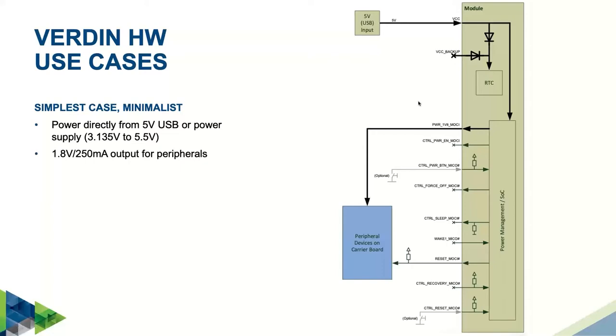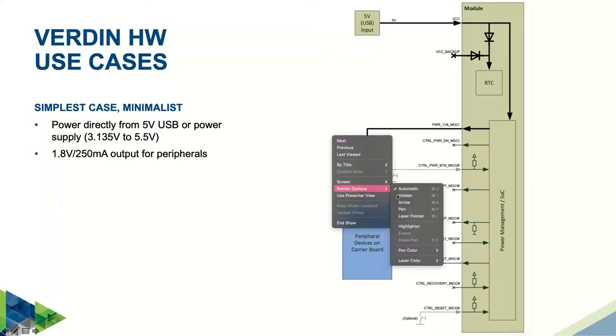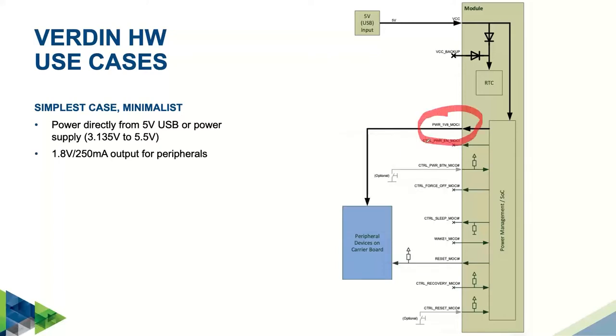Here, we are using the module's own 1.8V output to supply the peripherals on the carrier board. This already saves you some money and PCB real estate since you don't need to add a buck converter to generate a separate 1.8V supply. You're just going to need this buck converter if your peripherals use more current than the 250 milliamp that the module can provide.